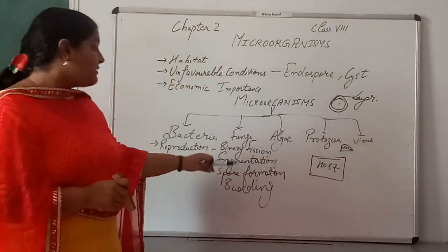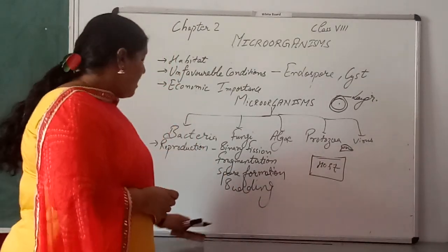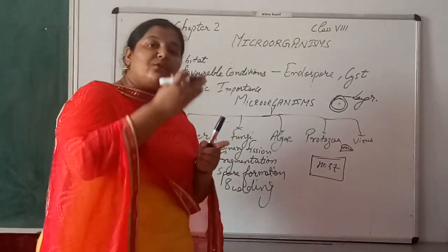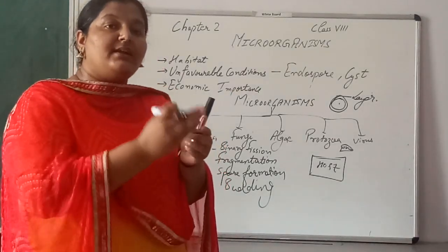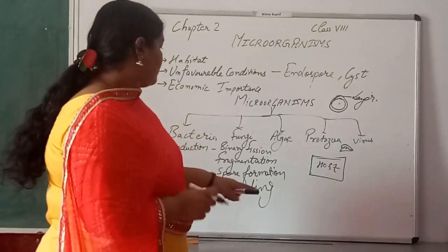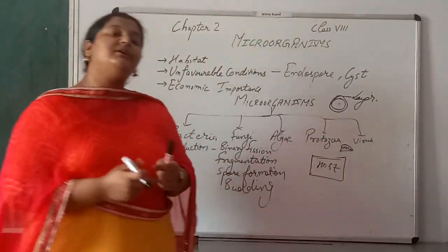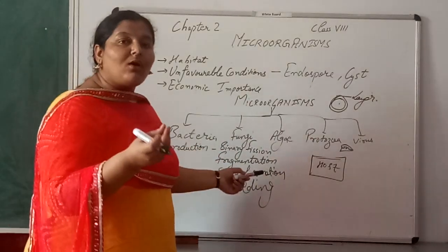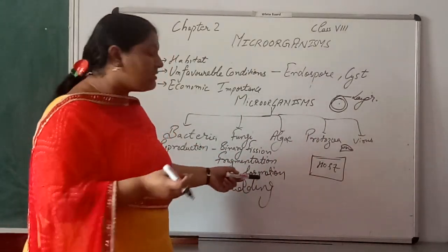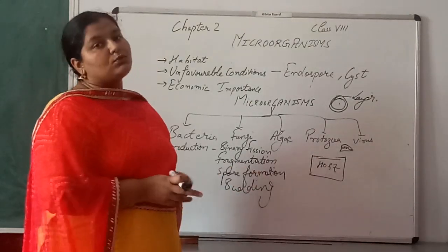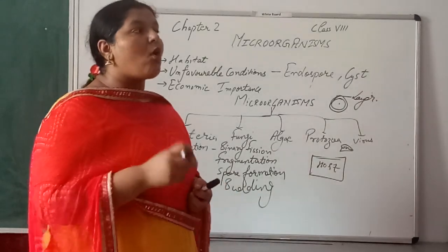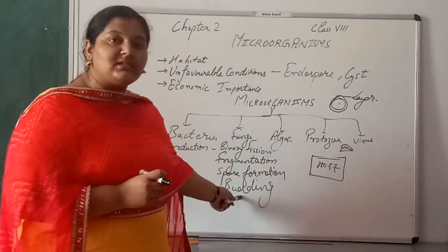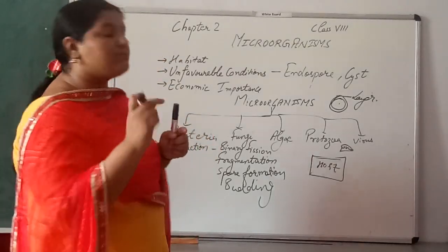Fragmentation is the process where the organism is divided into various segments and multiple copies are generated. Spore formation involves the release of small microscopic spore-like structures, common in fungi, which lead to reproduction. Budding involves a small outgrowth from the parent body — the organism multiplies by producing a small outgrowth from the parent body itself.